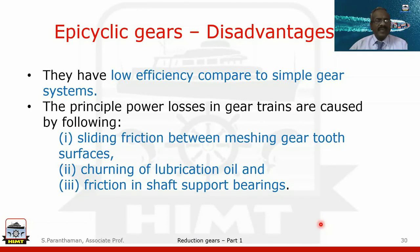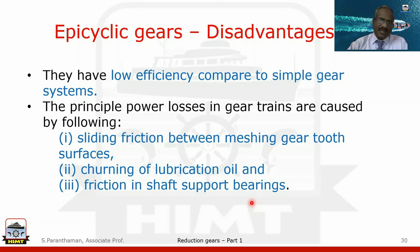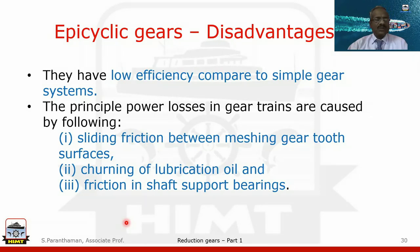The disadvantages of epicyclic gear: lower efficiency compared to simple gear systems. The principal power losses are caused by sliding friction between meshing gear surfaces, churning of lubrication oil due to the many moving pinions, and friction in shaft support bearings. Due to all these reasons, power loss is comparatively more.